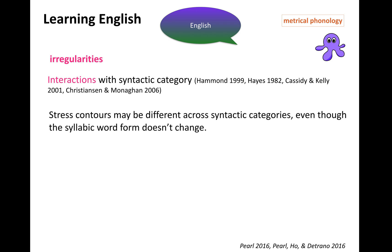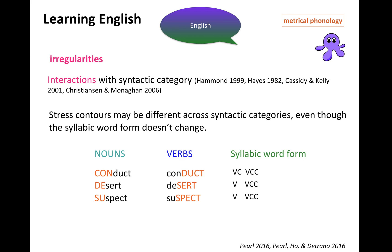There are also interactions with syntactic categories. Stress contours may differ across syntactic categories even though the syllabic word form doesn't change. Nouns versus verbs can share an underlying syllabic word form: 'conduct' the noun versus 'conduct' the verb — same syllabic form, different stress contours. 'Desert' versus 'dessert,' 'suspect' versus 'suspect' — same form, different stress patterns. This is a category-based thing that has nothing to do with the syllabic word form, and both forms appear in the language, which is tricky.